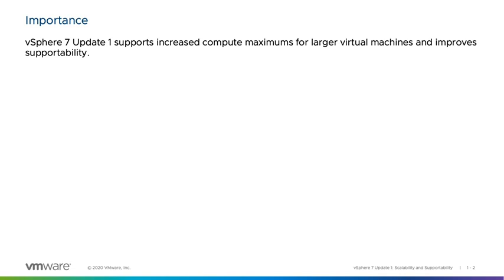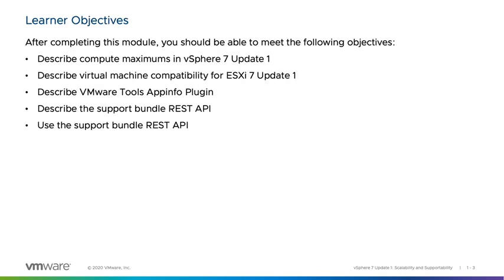At the end of this video, we'll have met the following learner objectives. We'll describe the compute maximums in vSphere 7 Update 1, describe virtual machine compatibility for ESXi 7 Update 1, describe the VMware Tools AppInfo plugin, and describe the support bundle REST API.